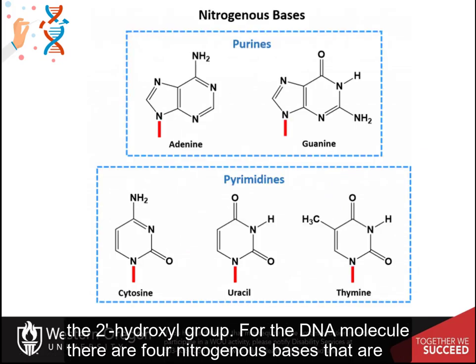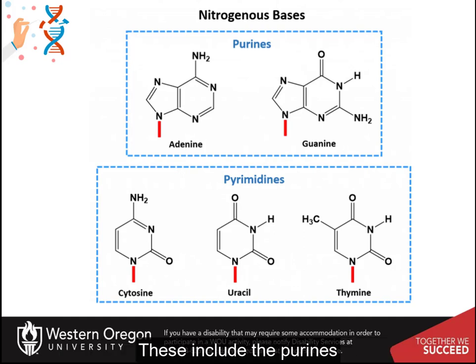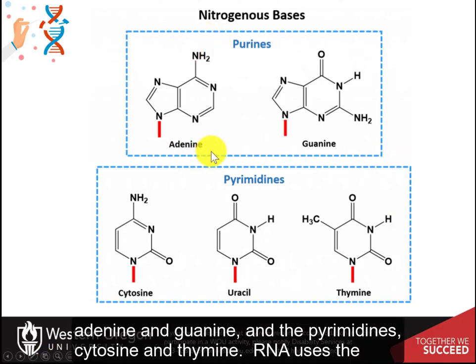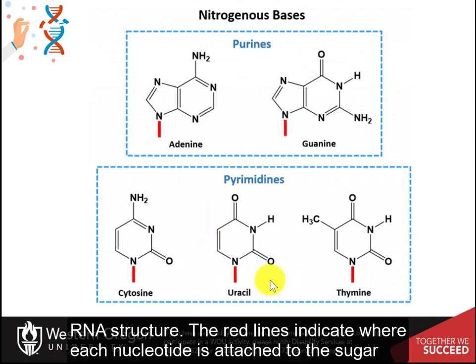For the DNA molecule, there are four nitrogenous bases incorporated into the standard DNA structure. These include the purines, adenine and guanine, and the pyrimidines, cytosine and thymine. RNA uses the same nitrogenous bases as DNA, except for thymine. Thymine is replaced with uracil in the RNA structure.